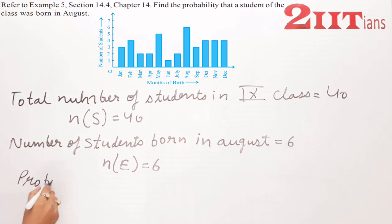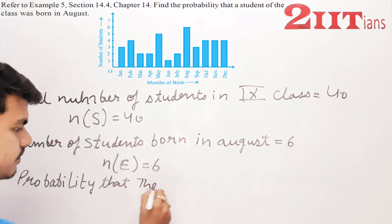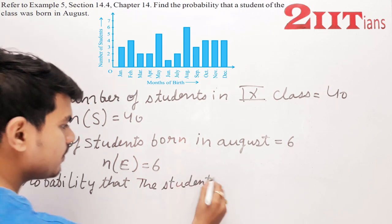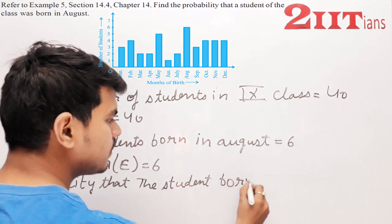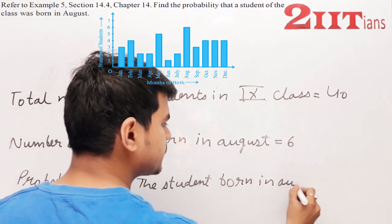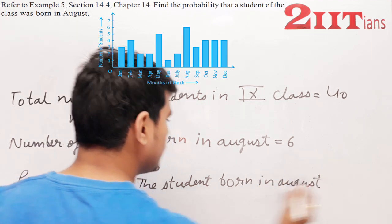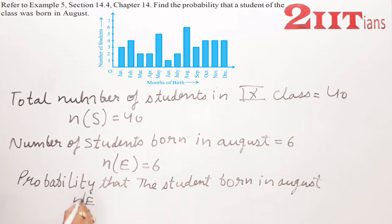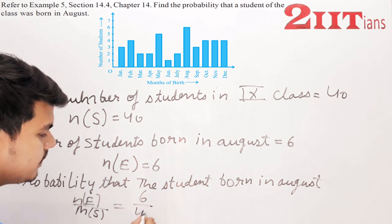Now we need to find the probability that the student was born in August. This is n(E) divided by n(S).